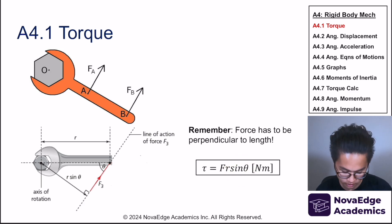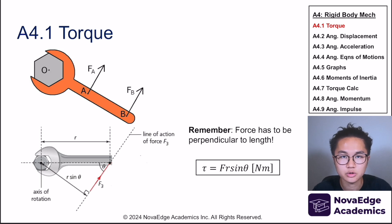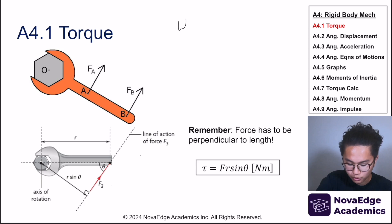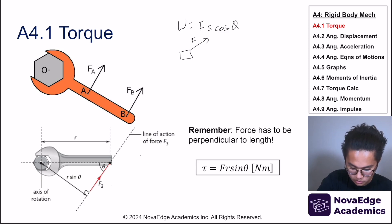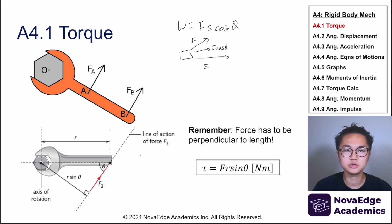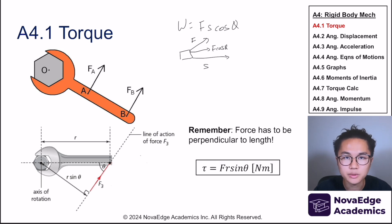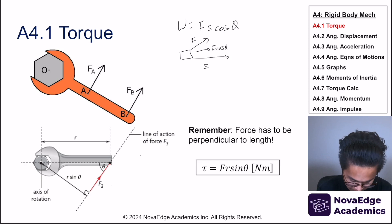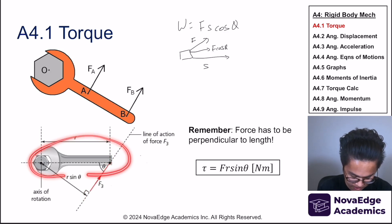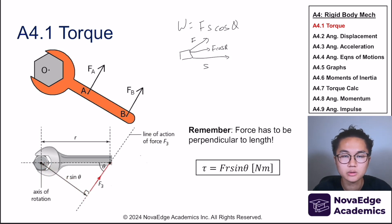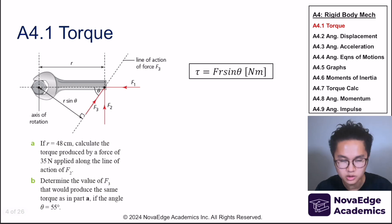We also have sine theta in the torque formula, which corrects the angle so that the force and the radius are perpendicular to each other. This is similar to the work formula: work equals force times displacement times cosine theta, where cosine theta ensures force and displacement are parallel. For torque, we need them perpendicular, so we use sine theta instead. For example, if a force F3 is applied at an angle to the wrench, we use r·sinθ to get the perpendicular component.